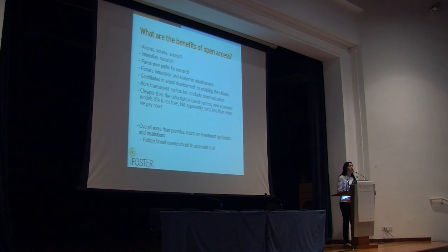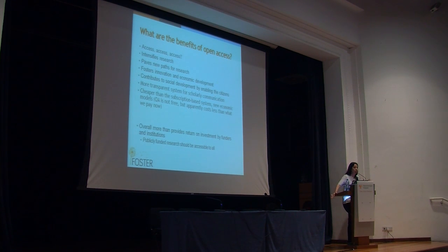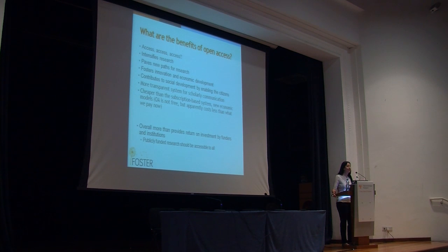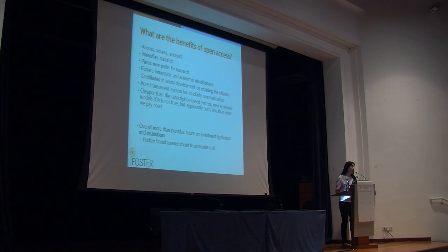Open access also contributes to social development by enabling citizens, and governments and public bodies are realizing this increasingly. Studies show that PubMed Central, the biggest open repository for medical research in the United States, sees 40% of its accessibility coming from individuals, from citizens. We know about discoveries made by individuals — for example, a 15-year-old who, using only Google and openly accessible materials, discovered medicine for cancer. Similarly, a 15-year-old discovered new galaxies using openly accessible information. Citizens are increasingly becoming involved in projects we call citizen science, which is especially important for research funded with public money.